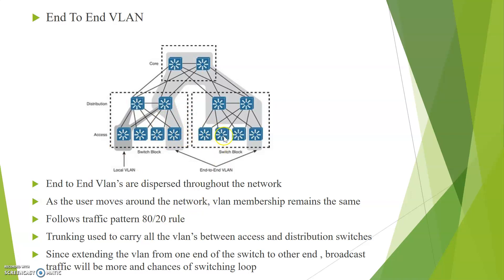Since this is an end-to-end VLAN, I need to carry the VLAN information between the access and distribution switches, so I need to enable trunking and VTP. Trunking and VTP are used to carry all the VLAN information between the access and distribution switches. Since we are extending the VLAN from one end of the block to the other, broadcast traffic will be more and there are more chances for a switching loop. These are the disadvantages of end-to-end VLAN.